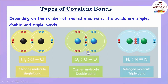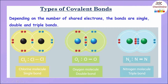Whereas, in the formation of the oxygen molecule, each oxygen atom requires two electrons to complete the octet, which means two electron pairs are shared. So, a double bond is formed because two electron pairs are shared, and the oxygen molecule has a double bond.